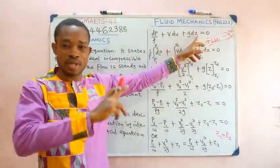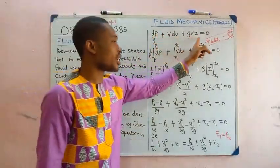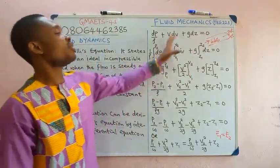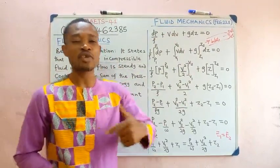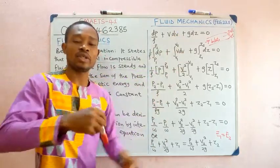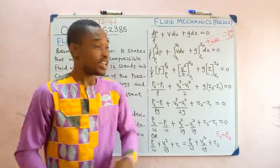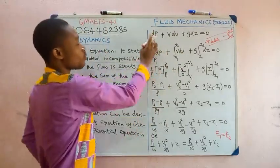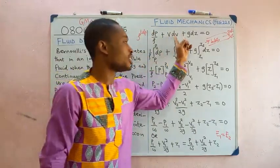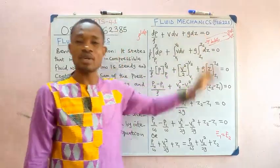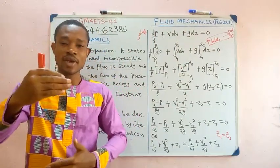To obtain Bernoulli's equation from Euler's equation, we integrate. Here dp multiplies 1/ρ, V multiplies dV, and g multiplies dZ, with everything equal to zero. We integrate each of the three terms from initial to final limits.